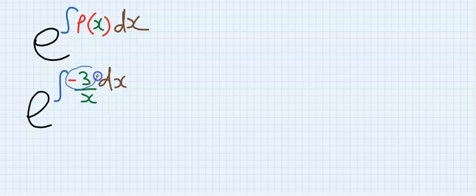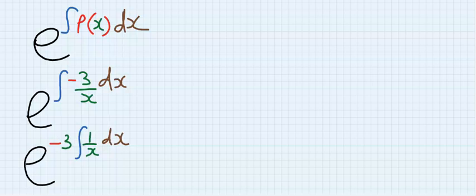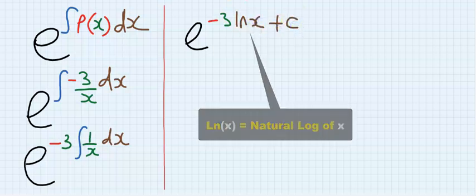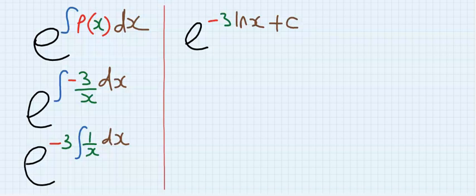Take this minus 3 out of the integral. Hence you can now integrate. If we integrate, we are going to have exponential minus 3 ln x. The plus c for an integrating factor is always zero, hence you don't include it.